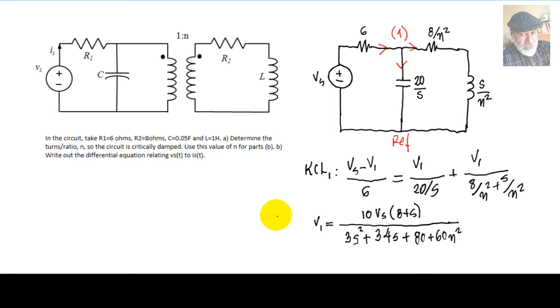We do the usual. We select the directions for the branch currents, reference node, node 1, and write a KCL equation and solve for V1. And look what we have.